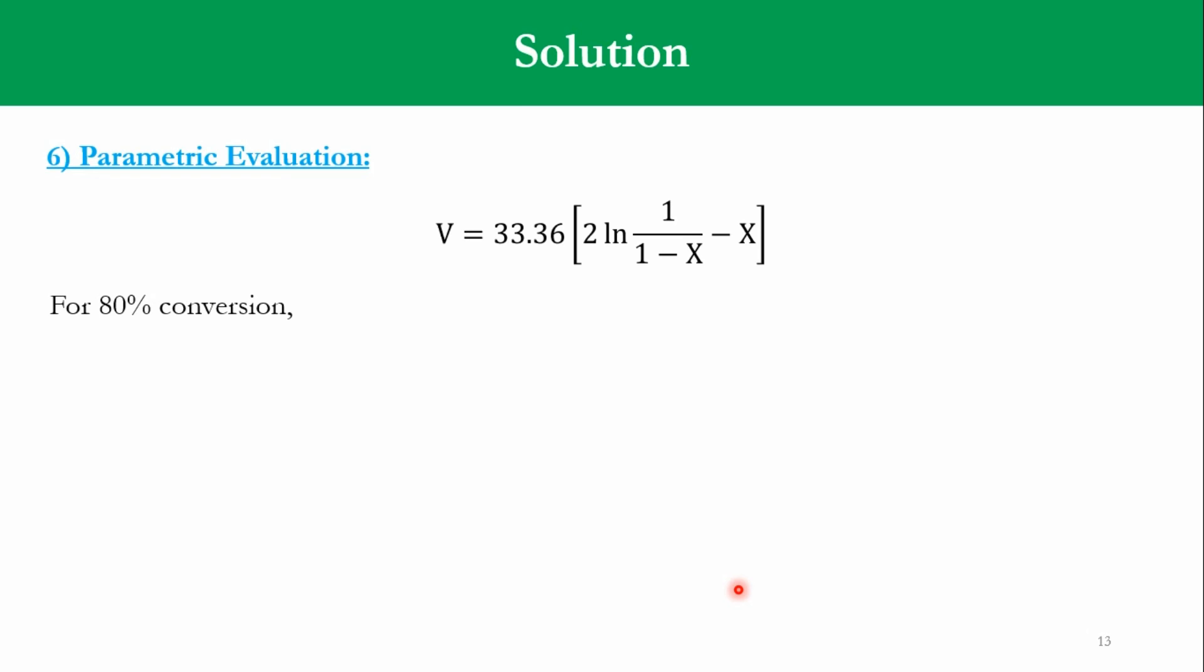For x is equal to 0.8, we get the final expression as V is equal to 80.7 cubic feet, that is equal to 2280 cubic decimeter, or that is equal to 2.28 cubic meter. We need a reactor volume of 2.28 cubic meter, or 80.7 cubic feet, to get 80% conversion of ethane to produce ethylene, and that quantity is 300 million pounds per year.